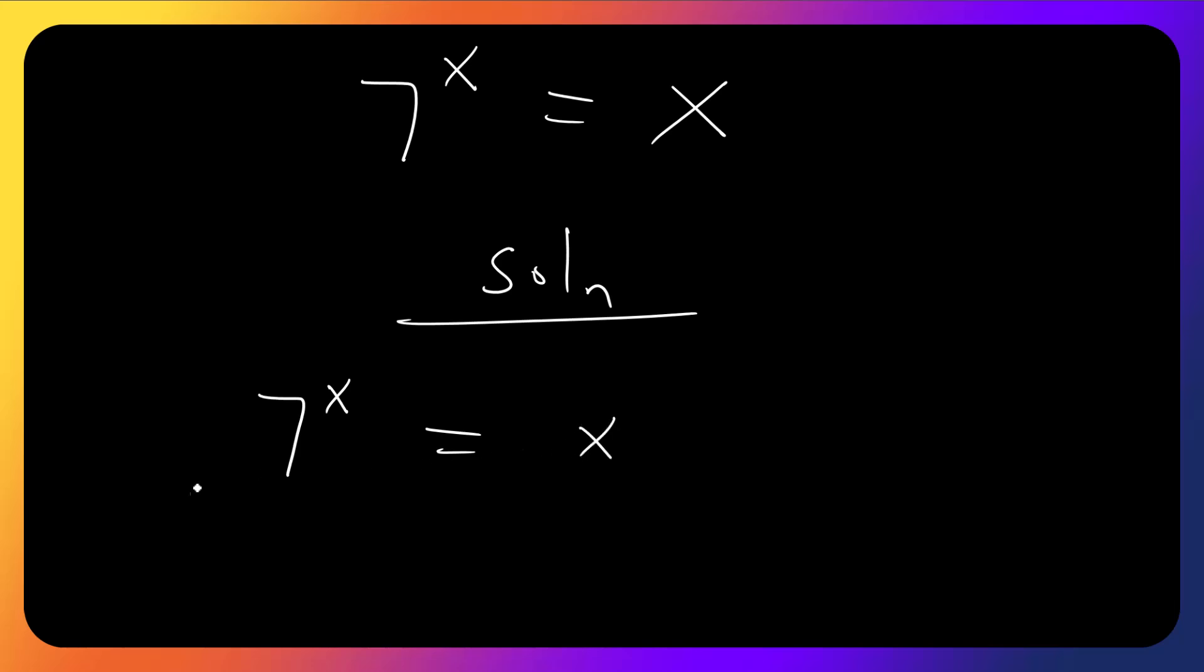This side will be, let's take ln of both sides. So this would be x ln 7 equals ln x.